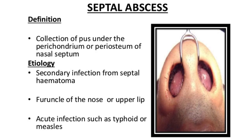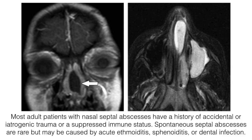Septal abscess is another cause of septal masses — a collection of pus under the perichondrium or periosteum of the nasal septum. The etiology is secondary infection from septal hematoma: if you get hit on the nose and create a hematoma, it can become secondarily infected. It can also come from a furuncle of the nose or upper lip — furuncles are usually infections related to hair follicles — and from acute infections such as typhoid fever or measles. Most adult patients with nasal septal abscess have a history of accidental or iatrogenic trauma, like putting things into the nose, or a suppressed immune system such as in HIV or AIDS. Spontaneous septal abscesses are rare but may be caused by acute ethmoiditis, sphenoiditis, or dental infection.